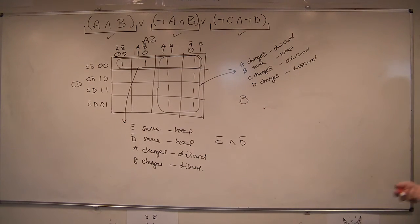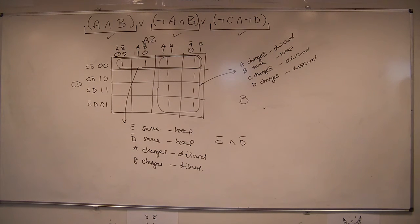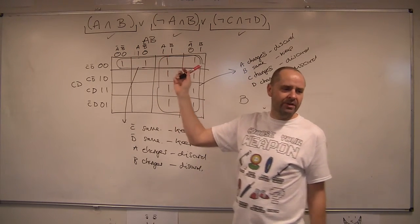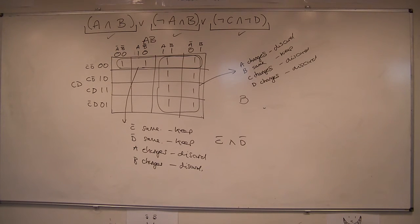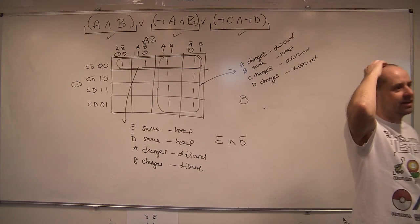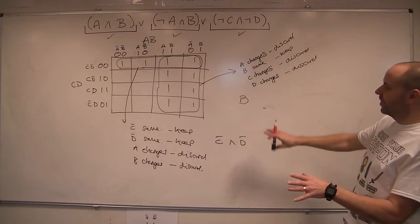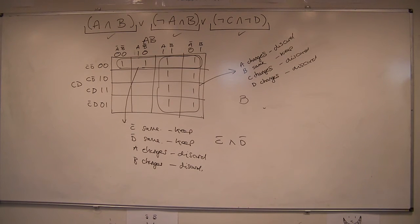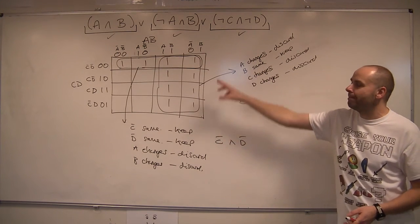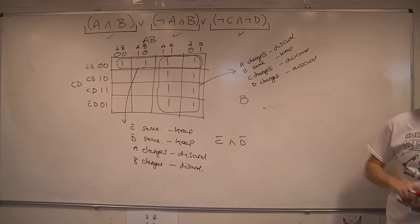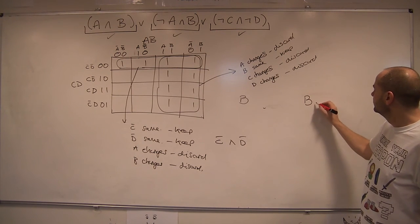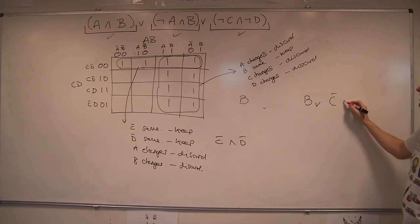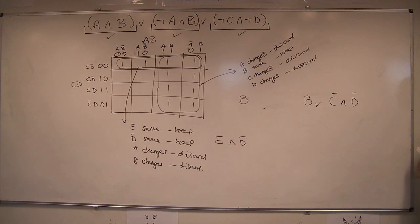When I did this before I had a different layout and it came out as a T-shape, but the result is identical — don't worry if your layout differs. I'd suggest always annotating the notation because it makes it trivial and you can't make a mistake. Now we take our individual terms and put them back together. We join them with ORs, just like the original expression had. So we get: B OR (not-C AND not-D). That's it — that's the reduced logic.